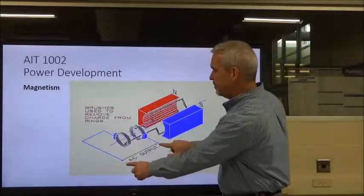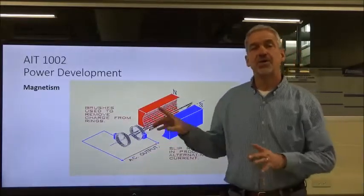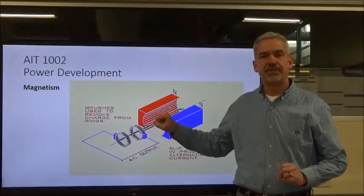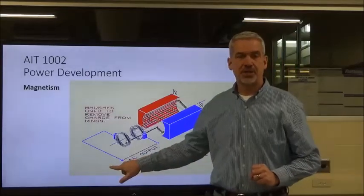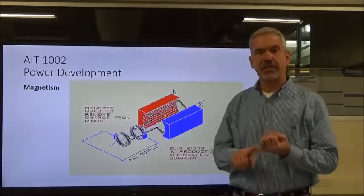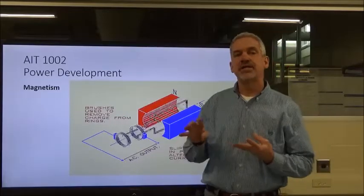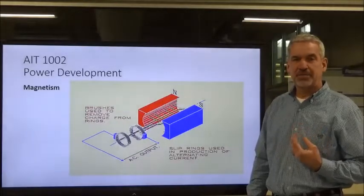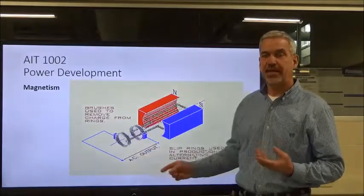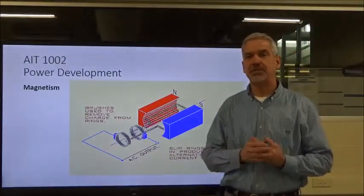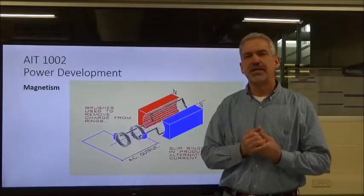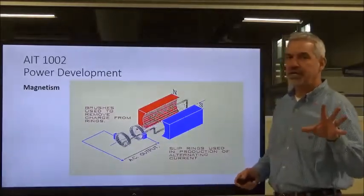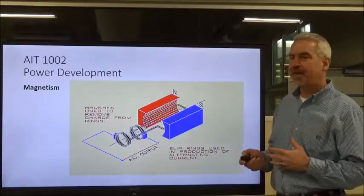Notice one important thing about the magnetic form of producing power — it creates alternating current, AC. All the others we talked about — chemical, pressure, heat, light — they all created direct current, DC. When we move a conductor through a magnetic field or vice versa, we're creating alternating current. That's where industry runs — roughly 95% of industrial power use is AC. That's how we create voltage using magnetism.